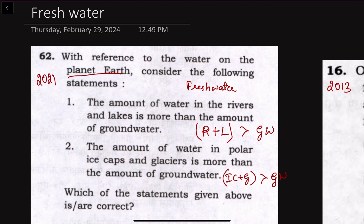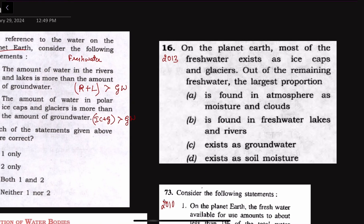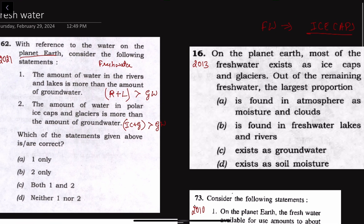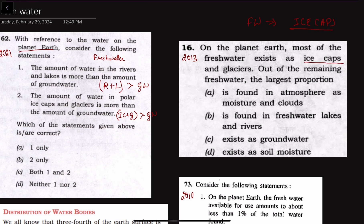A previous PYQ directly answers this question and solves the ambiguity. In the 2013 question itself, the given statement is: 'On the planet Earth, most of the fresh water exists as ice caps and glaciers.' So from the 2013 PYQ statement, we get confirmation that the amount of water in ice caps and glaciers exceeds any other water source — meaning the second statement in the 2021 question is correct.